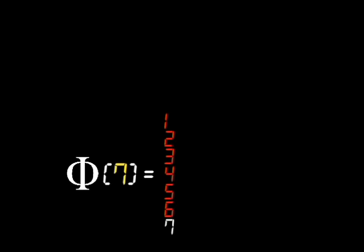To calculate phi of 7, a prime number, we count all integers except 7 since none of them share a factor with 7. Phi of 7 equals 6.